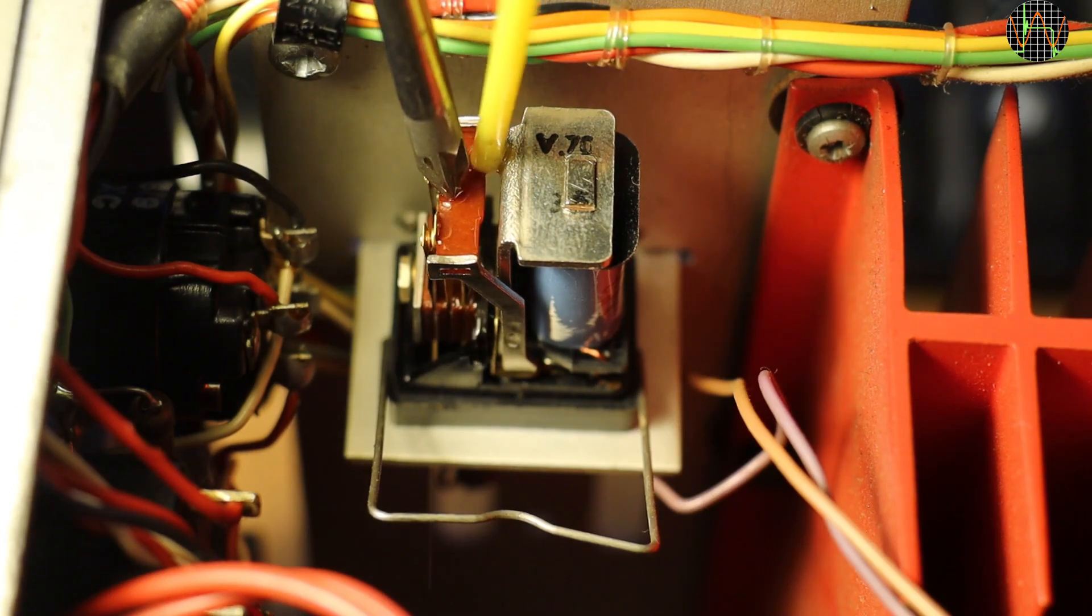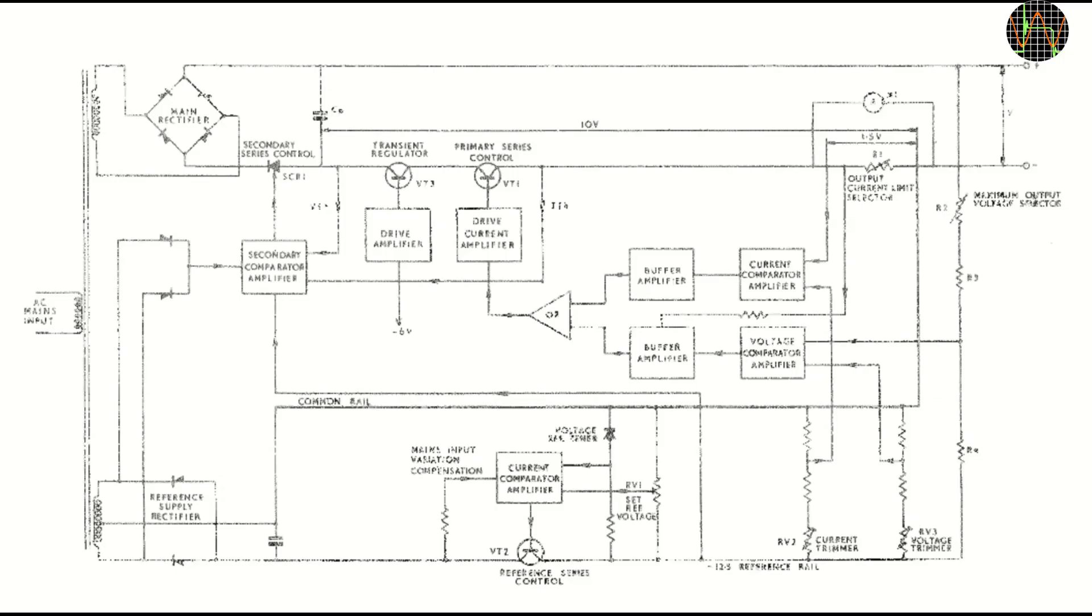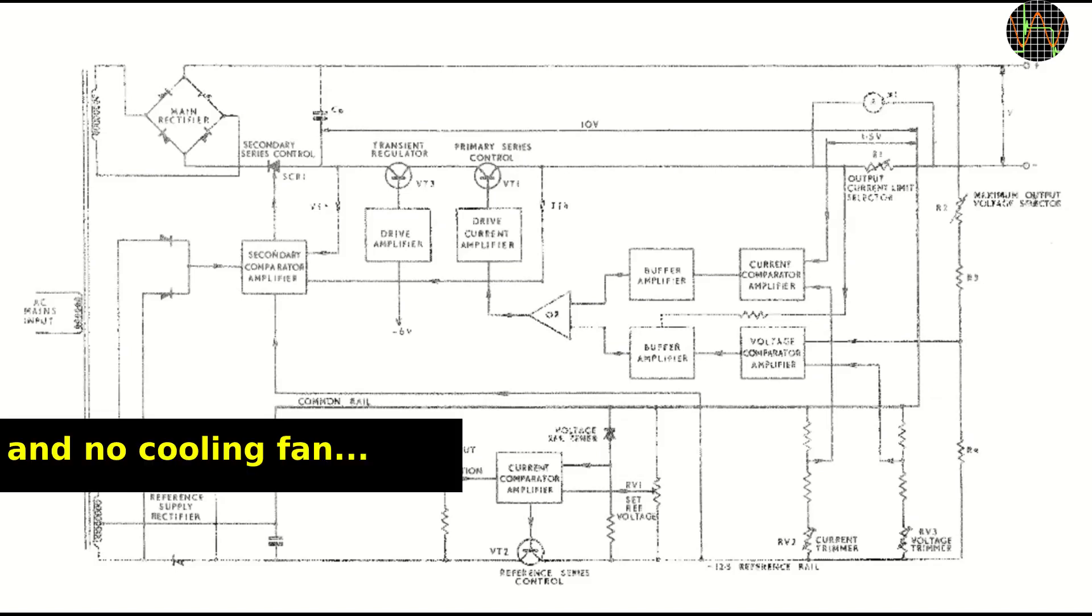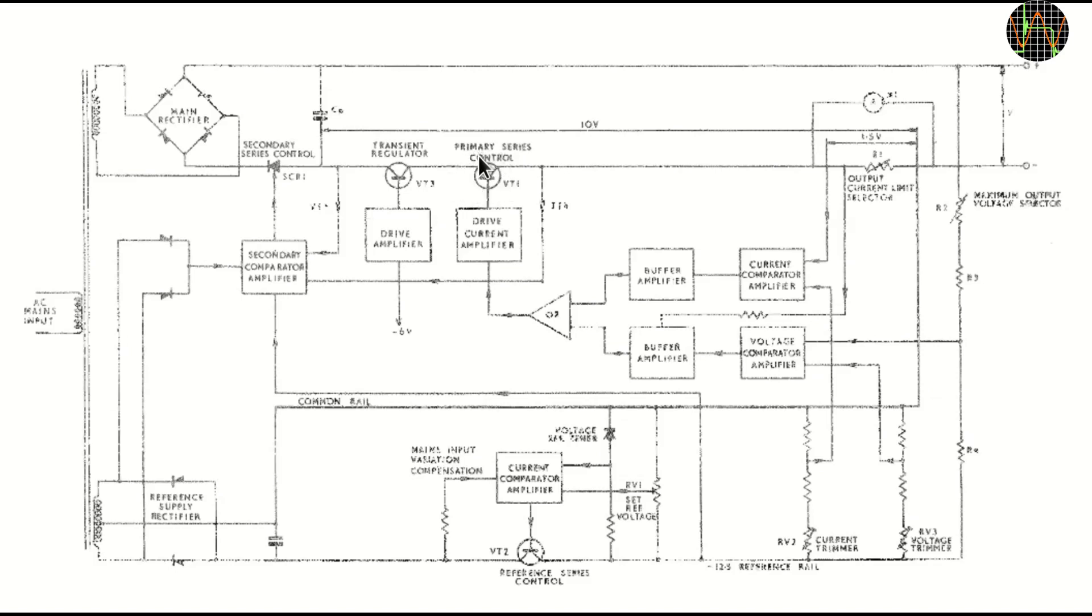Without going too much into details, a quick look at how the power supply managed to regulate 60V times 1.1A or 66W with just one pass transistor. With linear power supplies, the pass transistor basically has to convert the difference in voltage coming from the rectifier to the required output voltage into heat. In this power supply, the rectified voltage is around 70V to give some headroom for the regulated max 59.9V output. The transistor is most stressed if you need only a tiny voltage, say 3V at 1A because it would need to convert 70V minus 3 or 67V times 1A or 67W into heat.